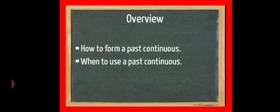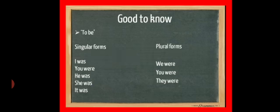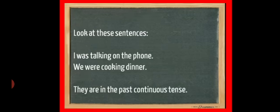Now, in this chapter, we will discuss more about how to form a Past Continuous and when to use a Past Continuous Tense. You know better, singular and plural forms. We always use was with I, he, she, it, whereas we use were with we, you, they. Got it? Next is, here are some examples. I was talking on the phone. We were cooking dinner. All these sentences are in Past Continuous Tense.